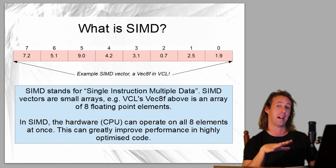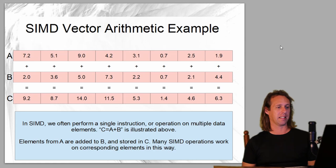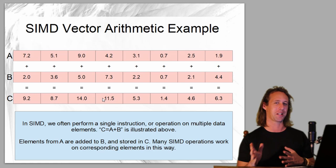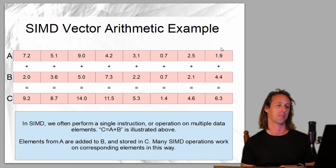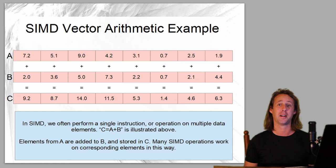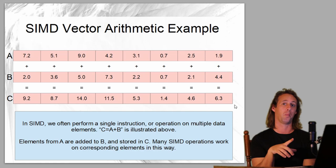It's just an array of eight floating point elements, but in SIMD the CPU - the hardware itself - can operate on all eight elements at once. Here we can see a little SIMD addition. We've got vectors A, B, and C, and what we're saying is C equals A plus B. What you get in SIMD programming is corresponding elements have the operation performed - in this case addition. Each element from vector A is added to the corresponding element of vector B, and the result is stored in vector C. So 1.9 plus 4.4 equals 6.3, 2.5 plus 2.1 equals 4.6, all the way across the vector.